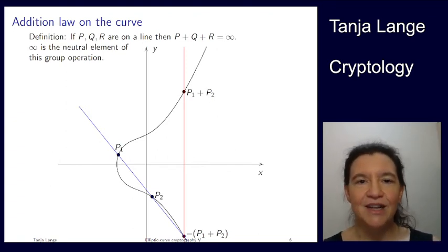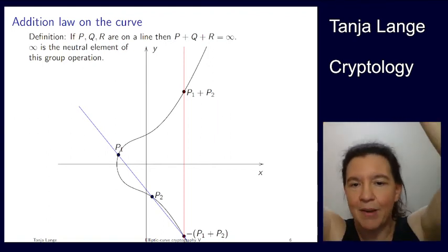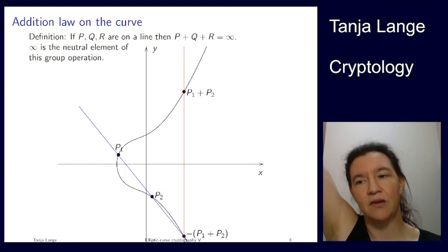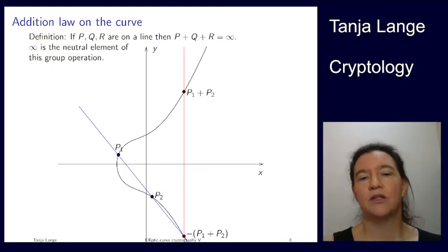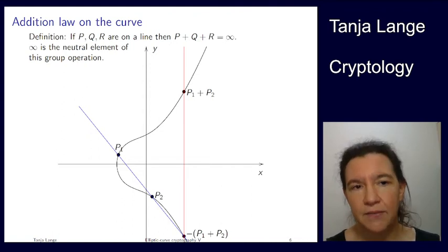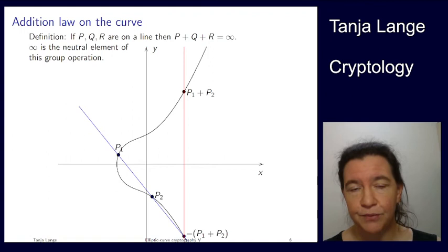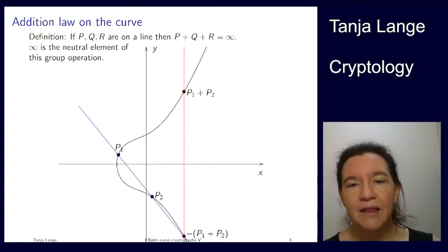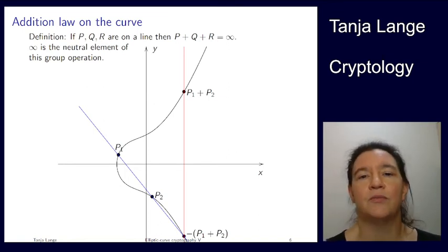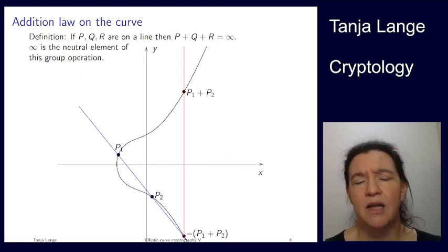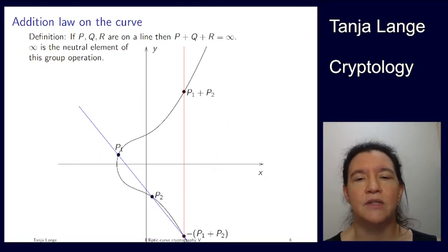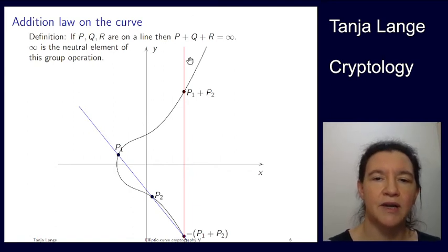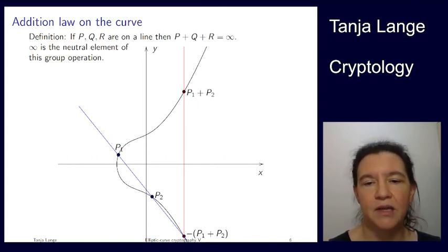So we have a cubic equation, and a cubic equation over the reals has either one root or two roots. The neutral element, this point at infinity, you can think of infinitely far out in the y-coordinate. So it's all the way up there. It's also actually all the way down there. It's where those lines meet. So it's a point which you can't really see, and that is the most important point. It's the neutral element of this group operation.